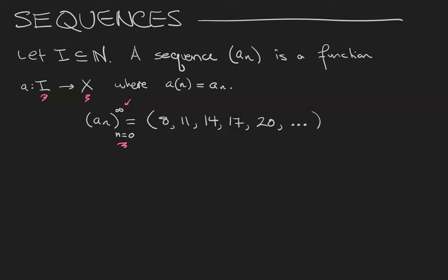Looking at it from the perspective of the function, we have the set of natural numbers 0, 1, 2, 3, 4, etc. Where 0 is mapped to 8, 1 is mapped to 11, 2 is mapped to 14, 3 is mapped to 17, 4 is mapped to 20, and so on. That's the way the function works.